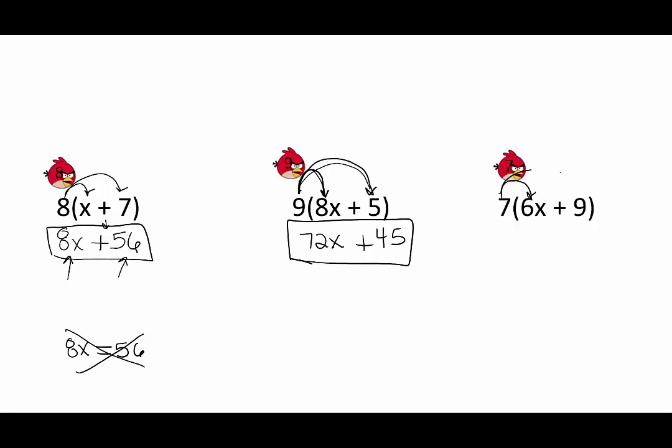Next, take the seven, launch it into the 6x and the nine. We get 42x plus 63. That is done. It is not an equation to solve. It is an expression to simplify. And that is distributive using Angry Birds.